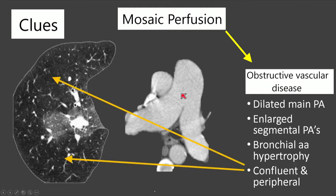As for distribution, obstructive vascular disease tends to produce mosaic perfusion that is more confluent and peripheral — the abnormal lucent lung is out in the periphery and very confluent. This contrasts with the more patchy and lobular appearance of mosaic perfusion related to air trapping.